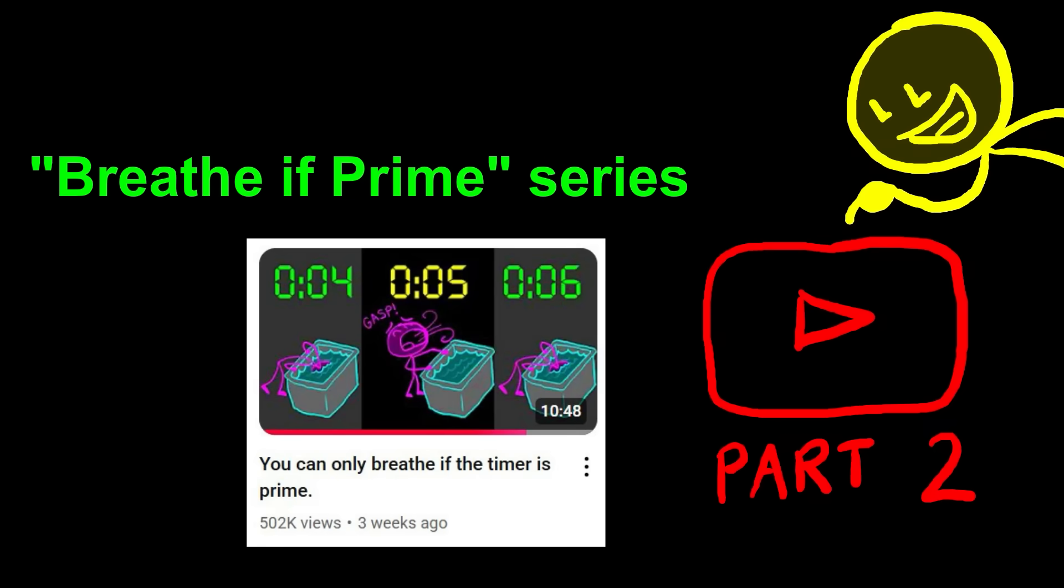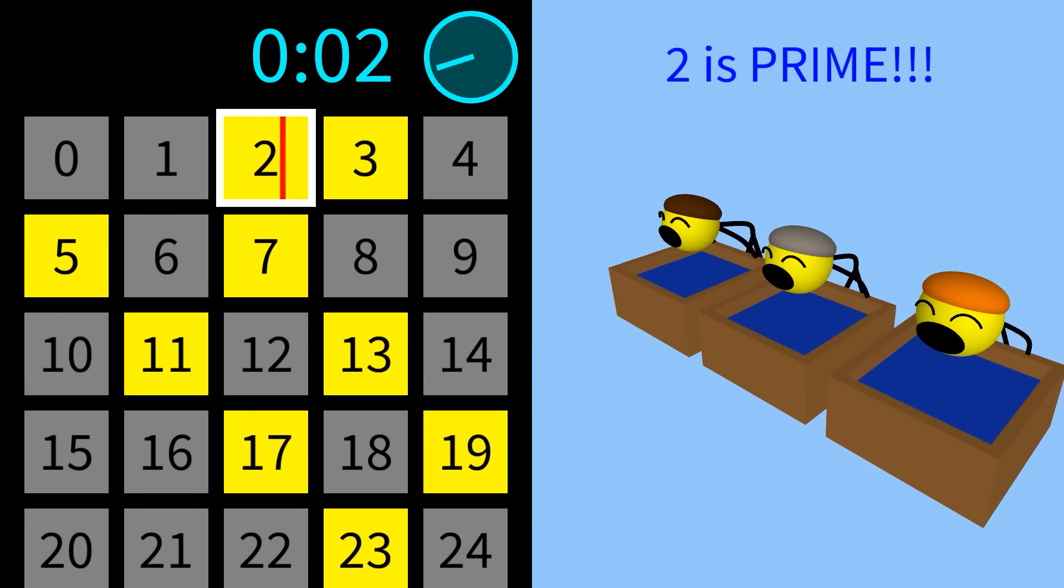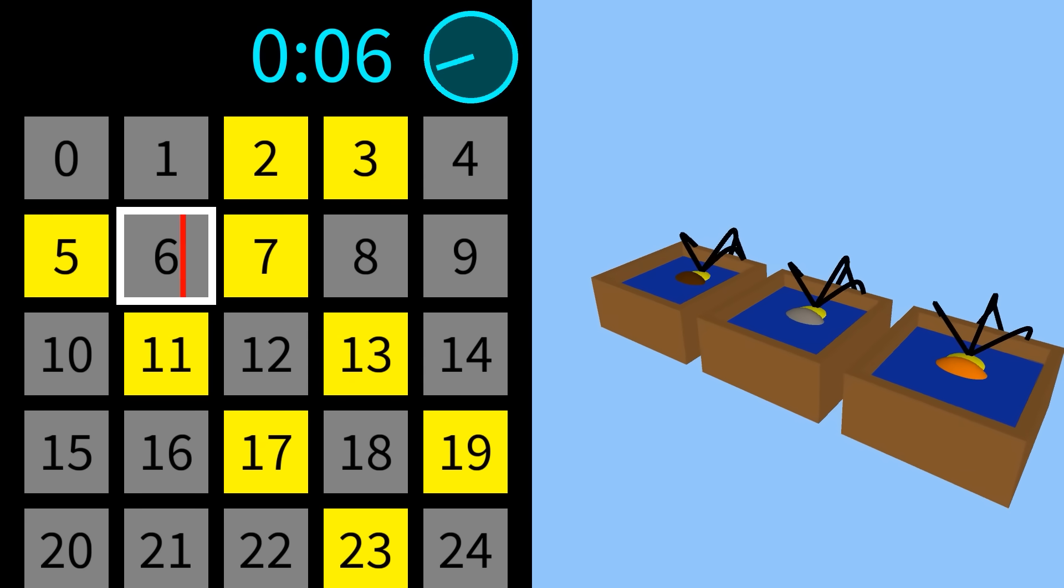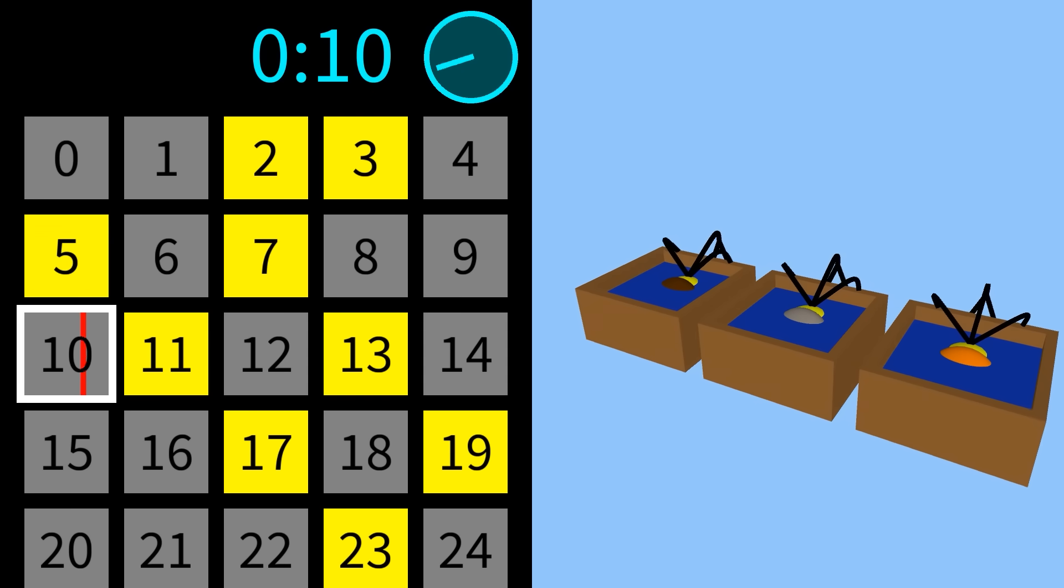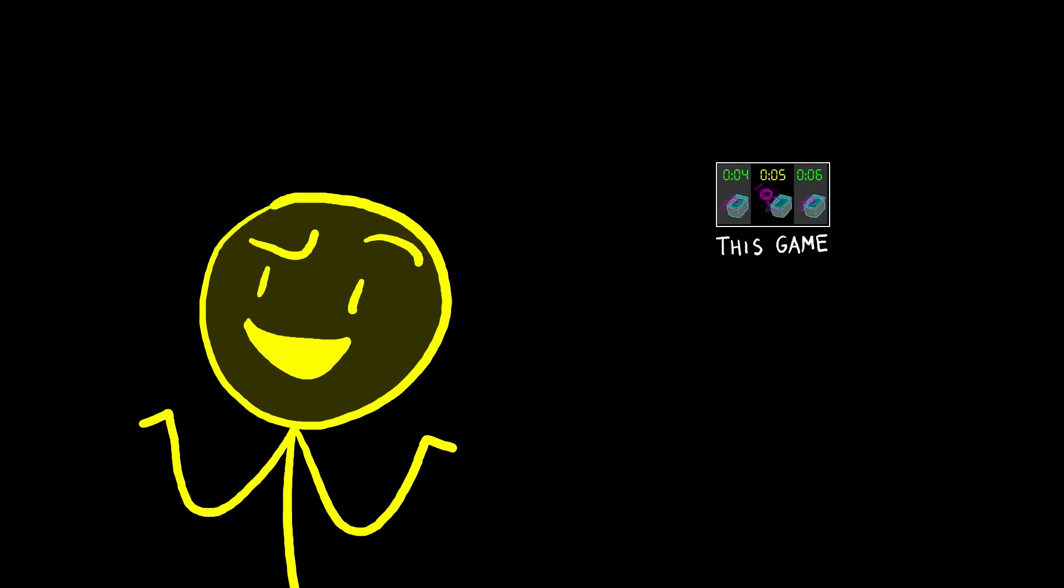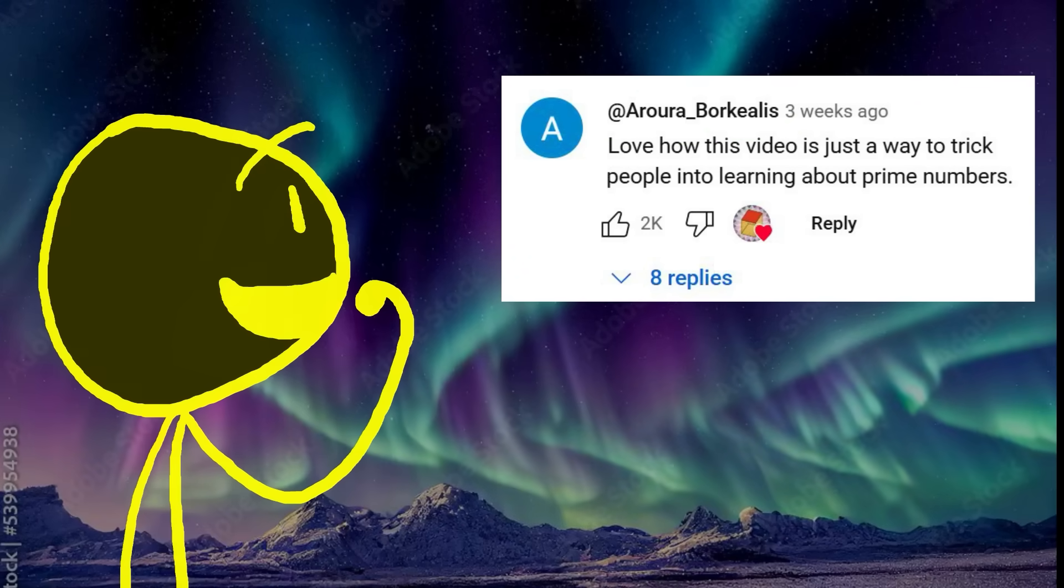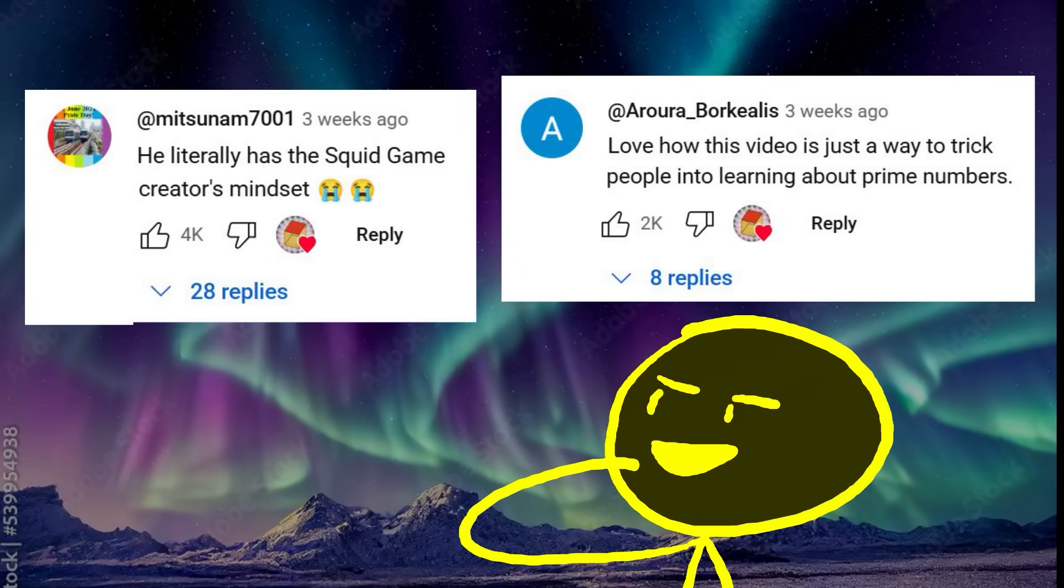Welcome to part 2 of my Breathe If Prime series. As a reminder, the rules of this game are that all participants must dunk their heads into tubs of water and they can only come up to breathe if the number on the timer is prime. If they breathe during a composite number or they pass out from lack of oxygen, they are eliminated. Why play this game? To learn math, of course. Aurora Borkialis pointed out it's just a way to trick people into learning about prime numbers with a dash of Squid Game-esque danger.